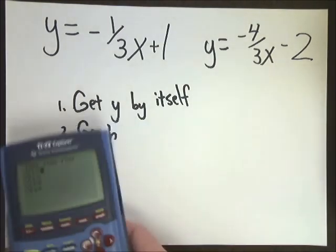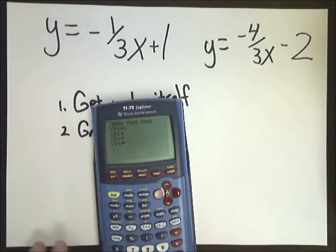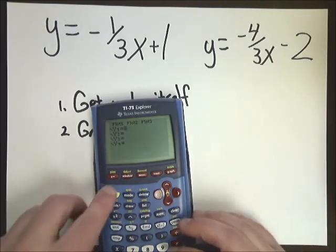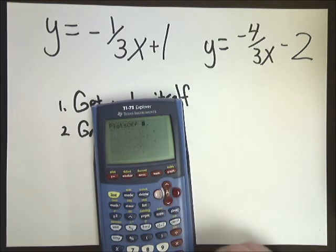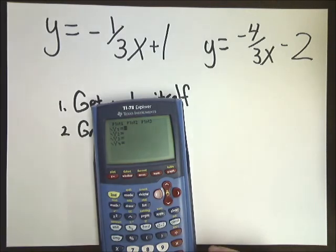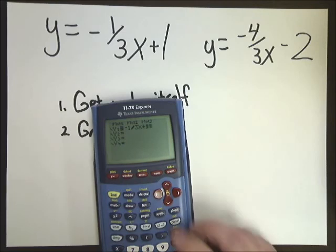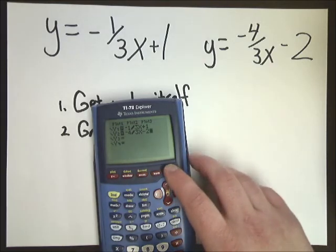So the next step is just to graph it. So you just graph it in the Y equals button. Like I said, you might have to turn the plots off to do that. You just go second and then go down to number four. Turn the plots off. That's in case you had a scatter plot or something else. Anyway, I'm going to type in negative one-third X plus 1 and then go down and do negative four-thirds X minus 2. Then I'm going to hit graph.